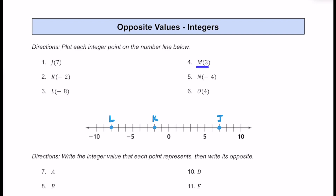For number 4, that's m. m is located at positive 3. Here's 0, 1, 2, 3. So I'm going to go ahead and put a dot over at 3, and that's going to be m. For number 5, n is negative 4. Here's negative 5. Negative 4 is going to be to the right of it — one space to the right of negative 5, that's going to be n. And then finally for number 6, we have o at positive 4. Positive 4 is just to the left of 5, a little bit smaller. So here's a dot at 4, I'm going to put the letter o underneath here so we have a little bit more space.